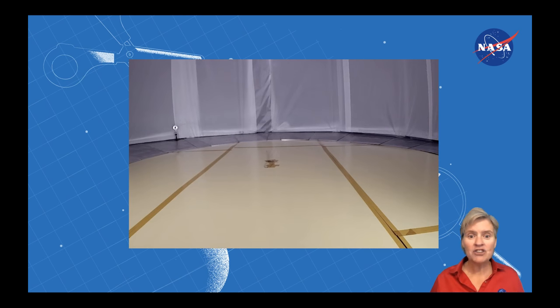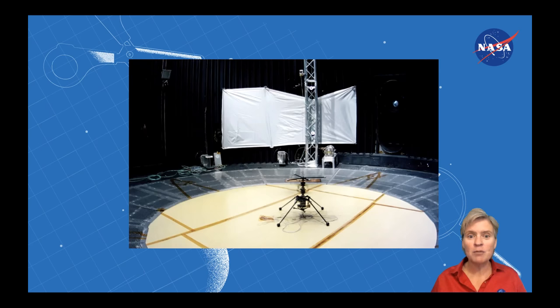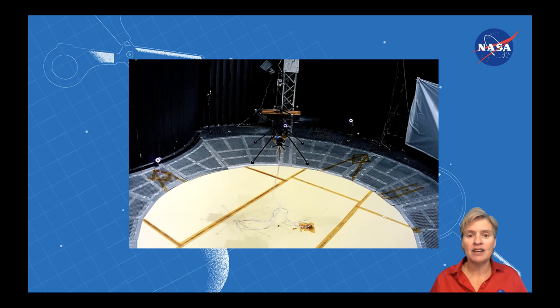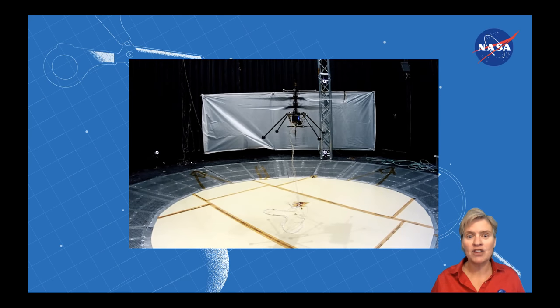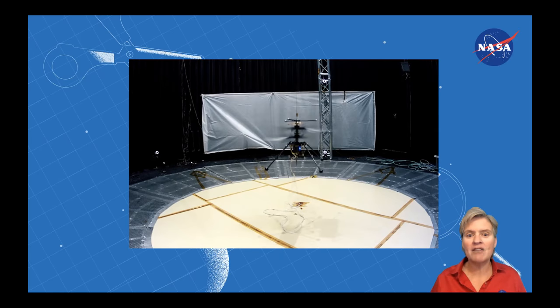Now, engineers had to do a lot of testing. They had to figure out what kind of a helicopter blade is going to help that helicopter get off of the planet. We have a chamber at JPL where we could pump out a lot of the air so we could test it in an atmosphere a lot like Mars. And we could also offset the gravity using a tether.